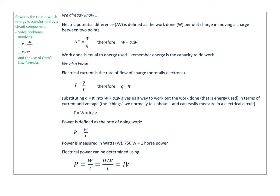So electrical power. Let's just take a little trip back in what we've looked at. We already know that electric potential difference, or delta V, is defined as the work done per unit charge in moving a charge between two points. So delta V equals W over Q. We rearranged that equation to get work done equals charge times voltage. Work done is equal to energy used. Remember, energy is the capacity to do work.